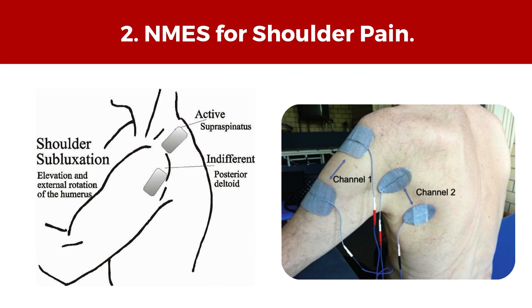The best way to manage shoulder pain that develops in the affected shoulder is NMES — neuromuscular electrical stimulation. It is part of electrical muscle stimulation and has high evidence in managing shoulder pain.